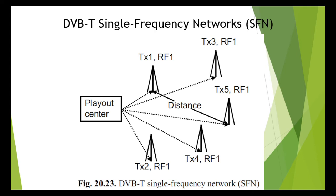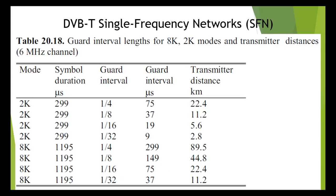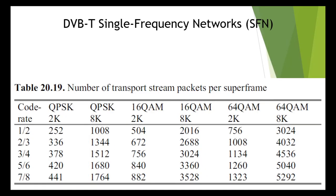The DVB-T modulation is structured in frames, one frame being composed of 68 DVB-T COFDM symbols. Within a frame the complete TPS information is transmitted, and the scattered pilots are scattered over the entire DVB-T channel. Four such frames in turn make up one super frame. So the frame structure of DVB-T is: 68 COFDM symbols equal one frame; four such frames equal one super frame.